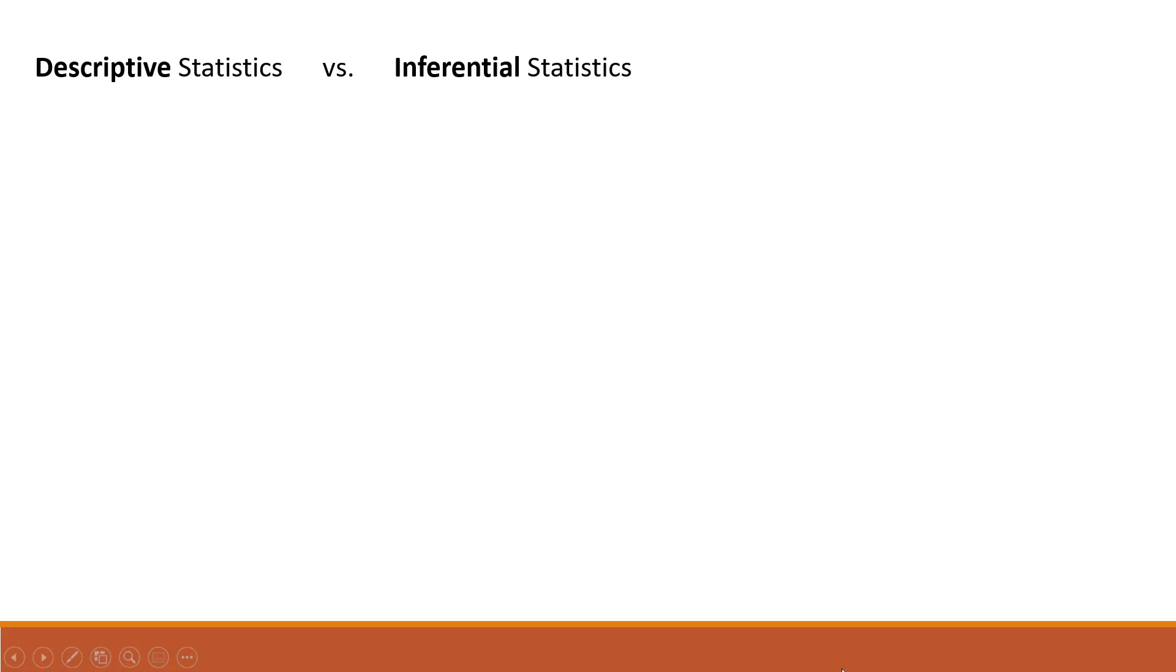There are two types of statistics, descriptive statistics and inferential statistics. What is the difference between those two? For both types of statistics, we obtain information from a sample. But here's the difference.